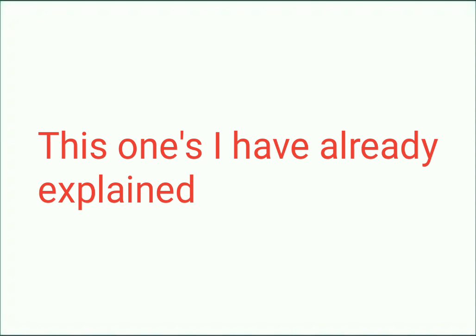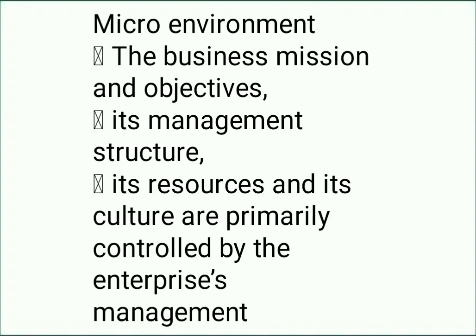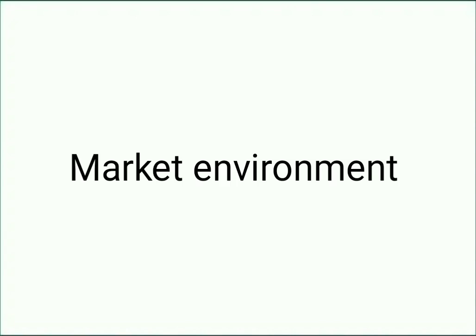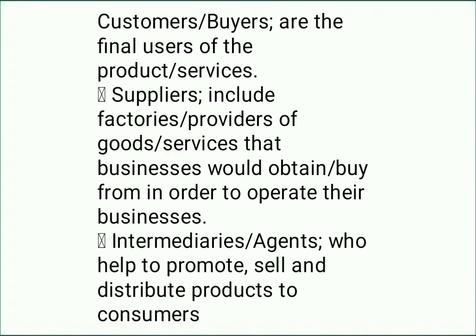Components of micro, market, and macro environment. The business and its objectives, management structure, resources, and culture are primarily controlled by enterprise management. Market environment: customers or buyers are the final users of the products. Suppliers include factories, providers, and goods and services that businesses obtain or buy from in order to operate. Intermediaries help to promote or distribute products to consumers. Competitors sell the same or similar products and have a great impact on the market.